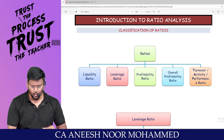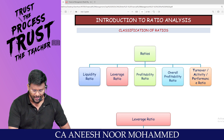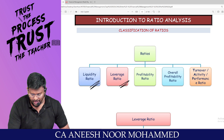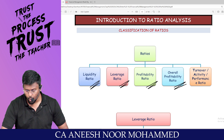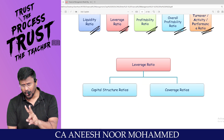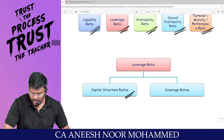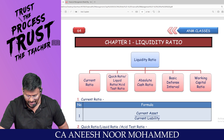The chapter ratio analysis is classified into five categories: number one, liquidity ratio; number two, leverage ratio; number three, profitability ratio; number four, overall profitability ratio; and number five, STAP ratio. There are two leverage ratios — capital structure ratio and coverage ratio.